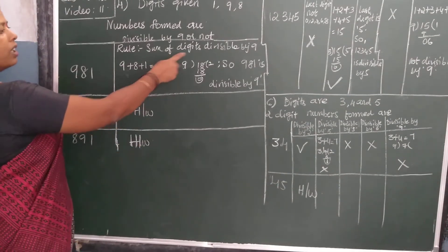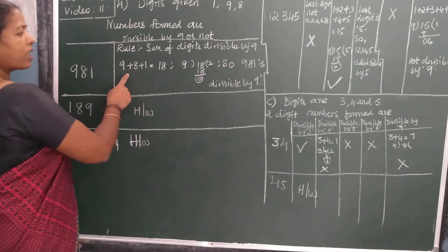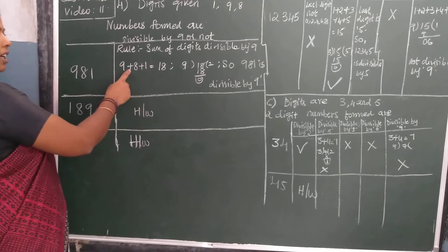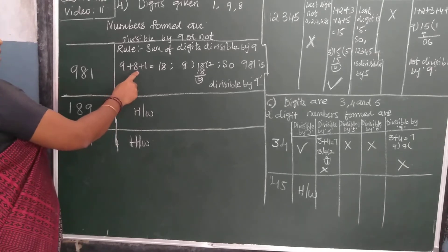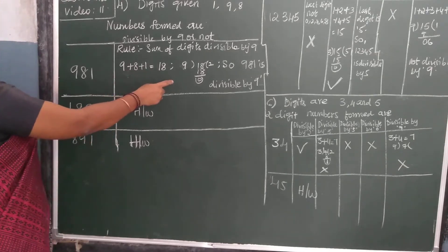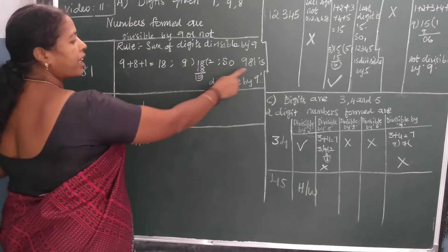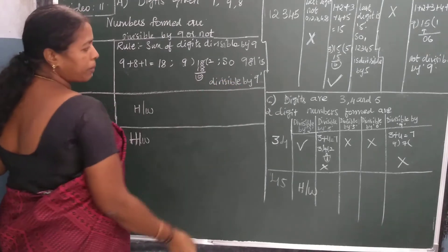You have to check for the rule for 9. What is the rule for 9? 9 plus 8 plus 1 is equal to 18. Since 9 divides 18, 981 is divisible by 9.